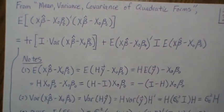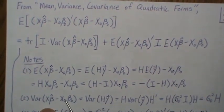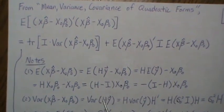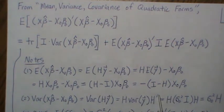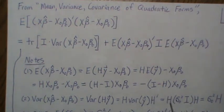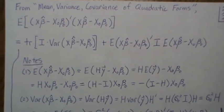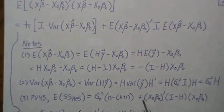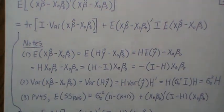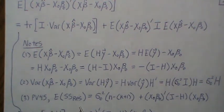Now let's find the variance. x naught beta naught is a constant so it doesn't affect the variance. Since x beta hat equals Hy, the variance is H times the variance of y times H transpose. Because H is symmetric, this is H times sigma naught squared times I, giving sigma naught squared times H. Also, from a previous video, the expected value of the sum of squares residual equals sigma naught squared times (n - k + 1) plus a nonnegative quadratic form — zero when overfitting, positive when underfitting.